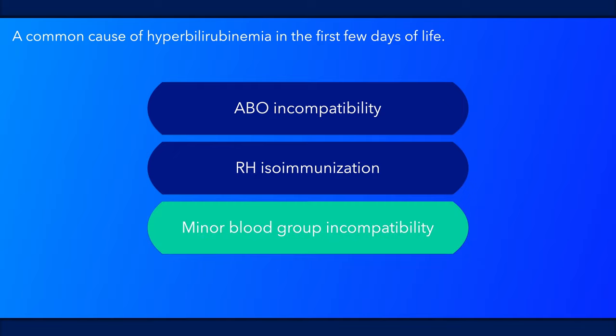Minor blood group incompatibilities, such as the Duffy antigen group, are less common but can also result in disease.